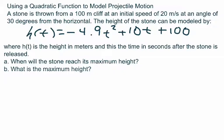The height of the stone can be modeled by h(t) equals negative 4.9t squared plus 10t plus 100, where h(t) is the height in meters and t equals the time in seconds after the stone is released.